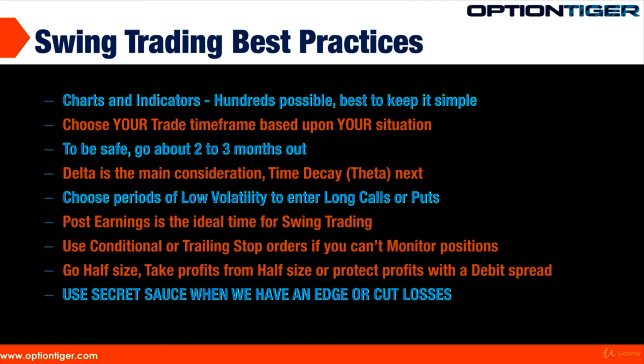Going out two to three months is safer for several reasons. First, it gives you more time to manage the trade. Second, every three months companies report earnings, and the earnings cycle can disrupt swing trades. You want to make sure you're out of the trade before the earnings cycle comes up again. Two months is a great window — it gives you enough time while allowing the trade a chance to play out before the next major disruptor.